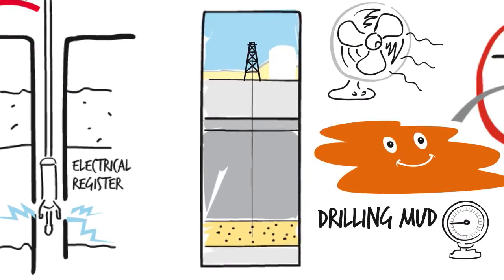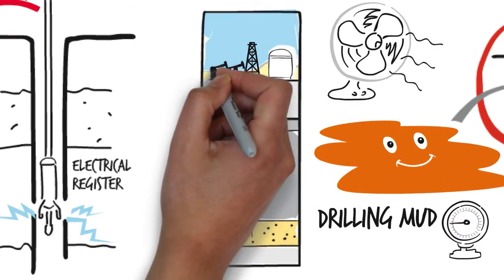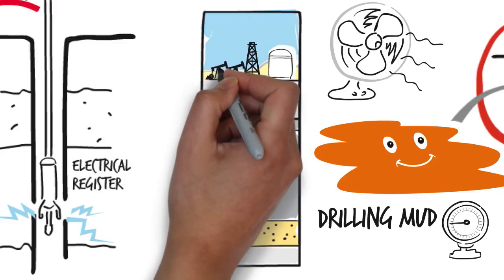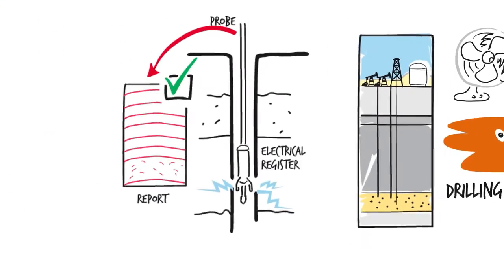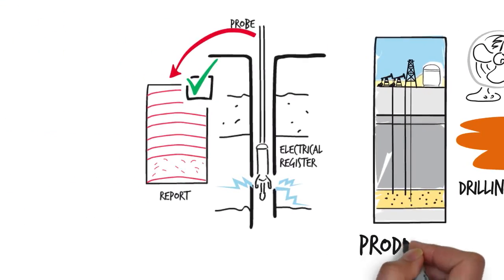If the answer is positive, a casing pipe is inserted in a borehole and held in place with cement. The following step will be the production test and if successful, the oil well is put into production.